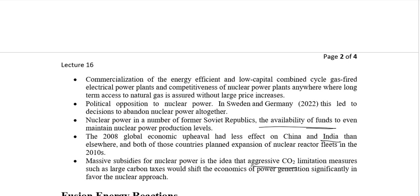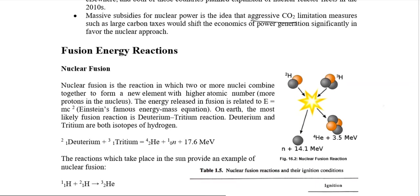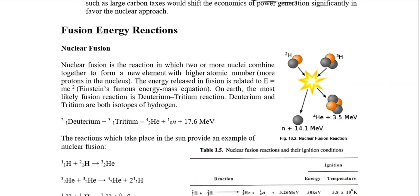That is some political background about nuclear power plants. Moving to nuclear fusion reaction: two or more nuclei combine together to form a new element with a higher atomic number. The energy in fusion is related to E=mc², and per unit mass per unit mole the energy released is much more than nuclear fission. When hydrogen is bombarded with one neutron it becomes deuterium, and when bombarded with two neutrons it becomes tritium.